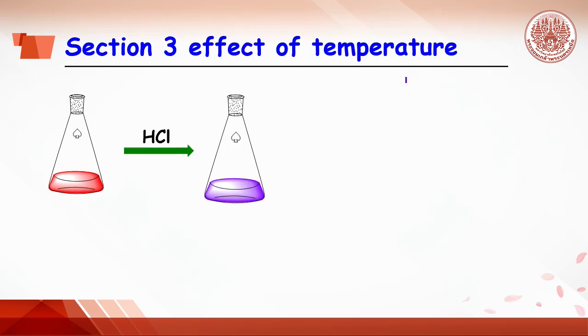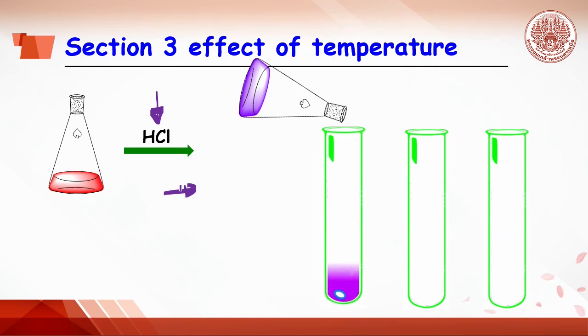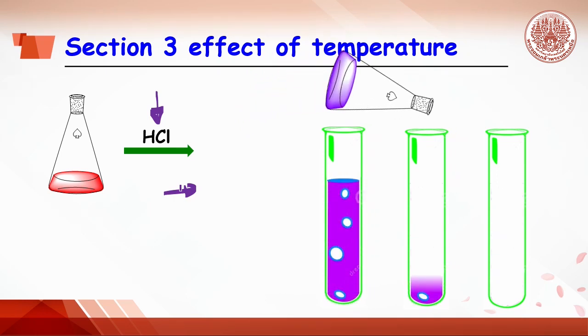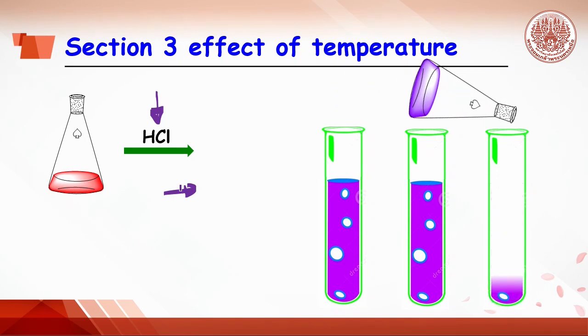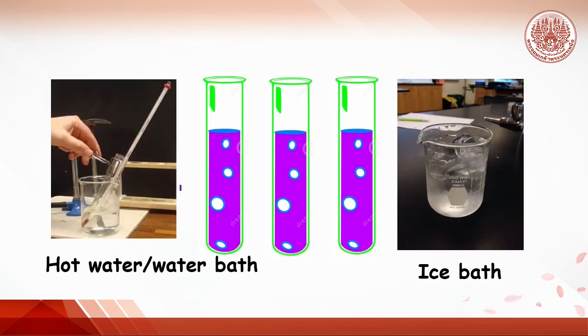Section 3: effect of temperature on shifting the equilibrium position and determination whether the reaction is exothermic or endothermic. Hydrochloric acid is added into the cobalt solution till purple color appears. Pour or drop the solution in three test tubes. Place the first test tube into hot water and the second test tube in cooling bath or ice bath for one to two minutes and observe the color change.